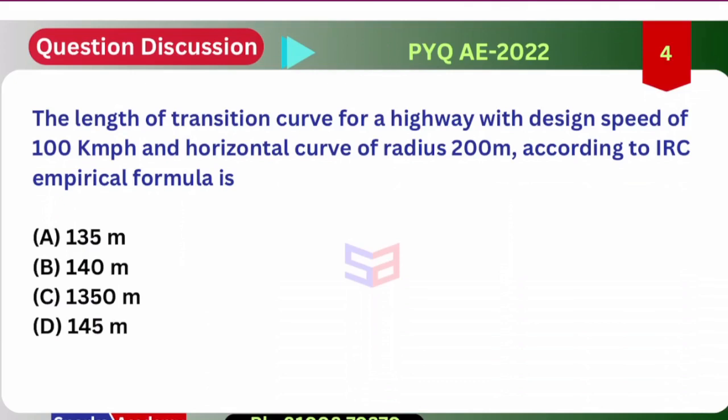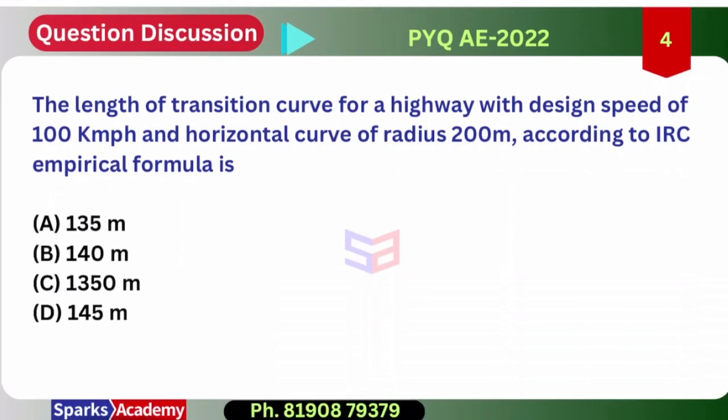The first question is regarding the transition curve. The length of a transition curve for a highway with design speed of 100 km/h and a horizontal curve of radius 200 meters, according to the IRC empirical formula, is what? To calculate the length of a transition curve, we have three different methods: centrifugal acceleration, super elevation, and the direct empirical formula.